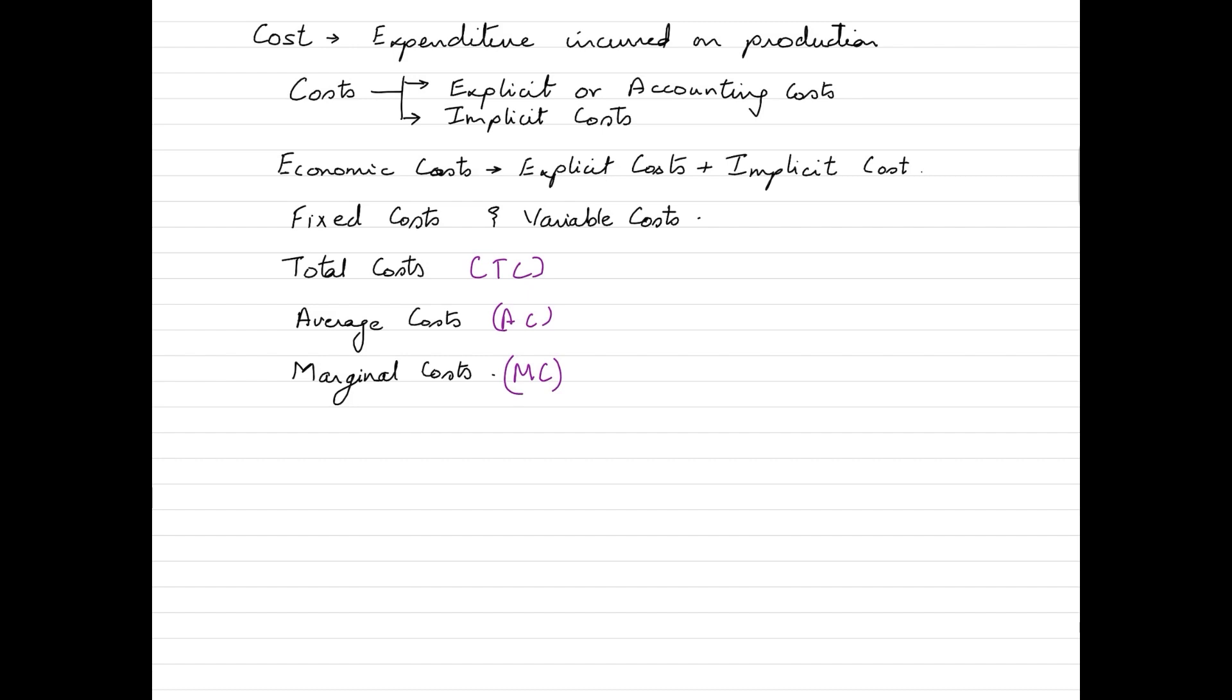When we talk about average costs, this is the cost per unit of output and it is calculated by dividing total cost over the quantity of output produced.